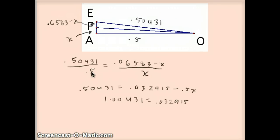I have here the proportion, 0.50431 over 0.5 equals 0.06583 minus X over X. I cross-multiplied. I move the 0.5X over to the other side. And finally, I divided both sides by 1.00431 to get the value of AF to be 0.03277.